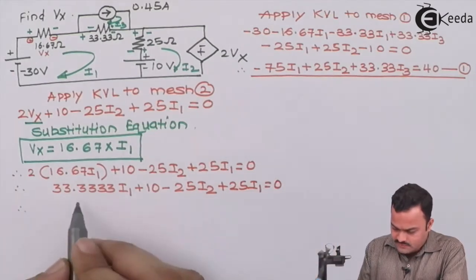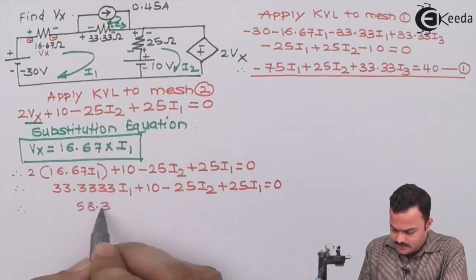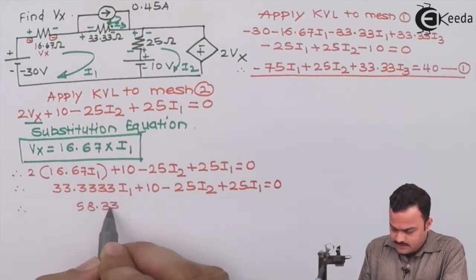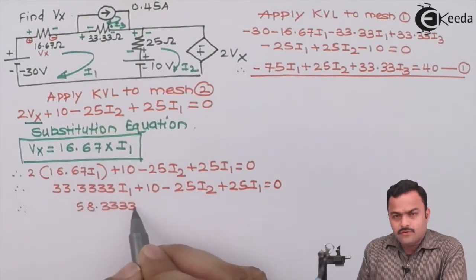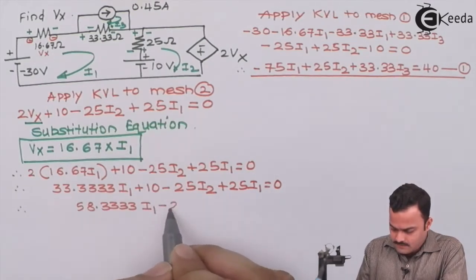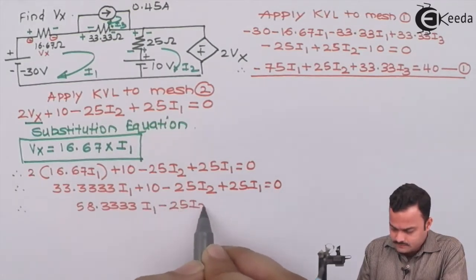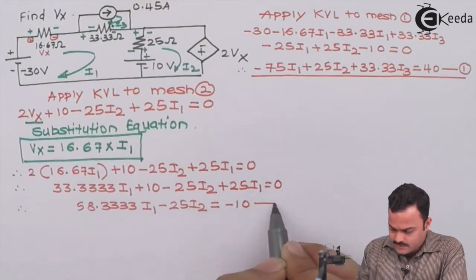So this will be 58.33, actually we can make it 34 also, so that will not make any difference as such, minus 25i2 equal to minus 10 as equation number 2.